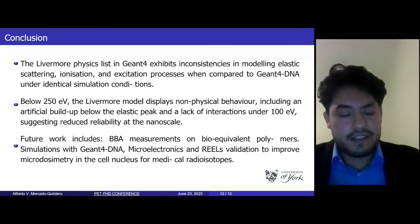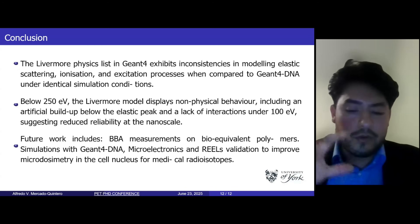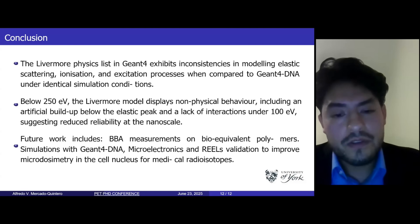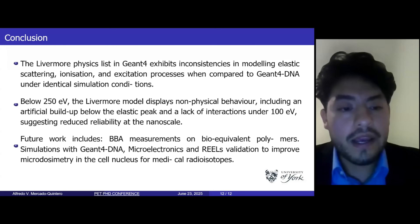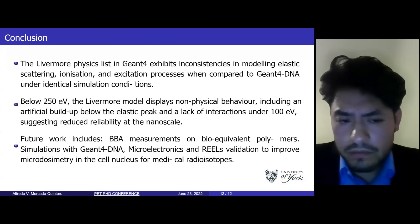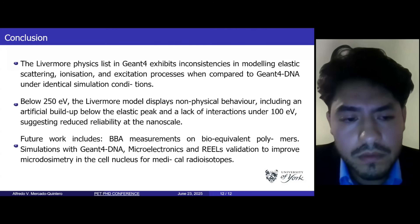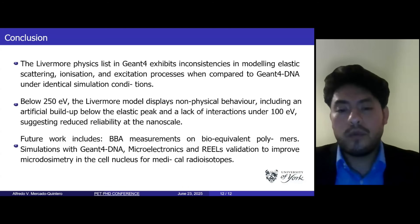A follow-up question asked why Geant4-DNA is not used instead, given its accuracy. The presenter explained that at those low energies, Geant4-DNA becomes computationally expensive and starts getting stuck with the volume of simulations being run simultaneously. The presenter confirmed they are currently running simulations on Ubuntu rather than using a cluster such as Viking.